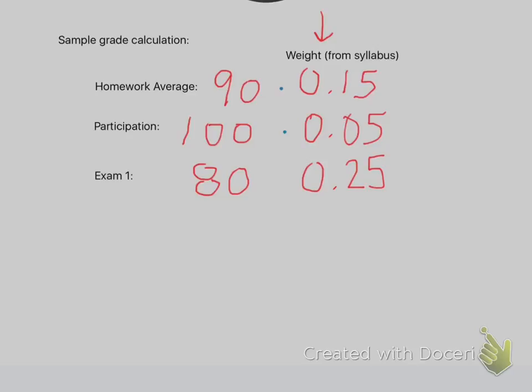What you do with these numbers is multiply them all out and add them up. This gives a 38.5. Now there's no way you have a 38.5% in the class because all of your grades have been either B's or A's.